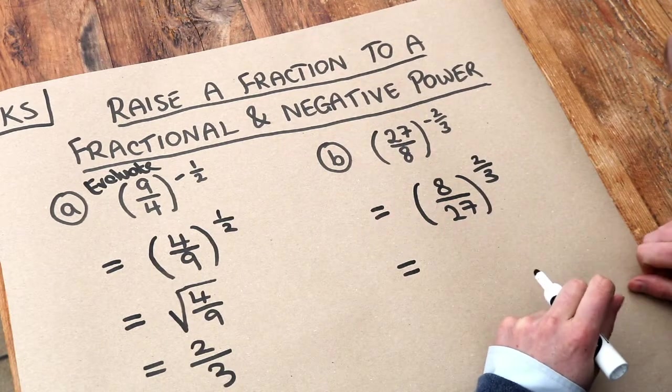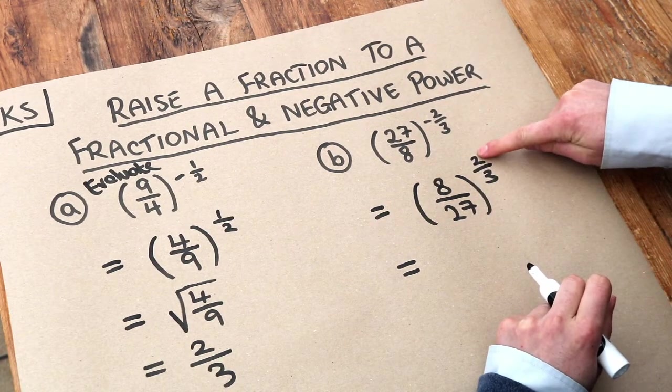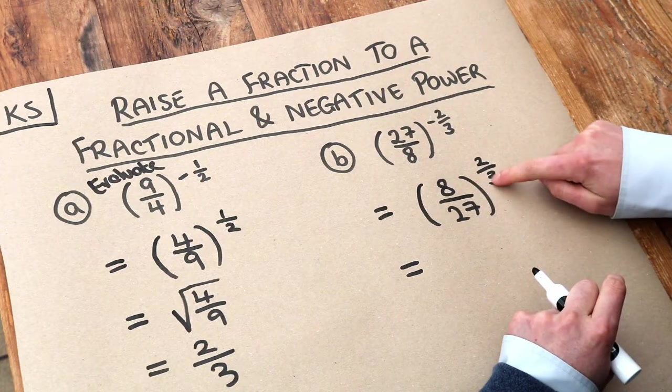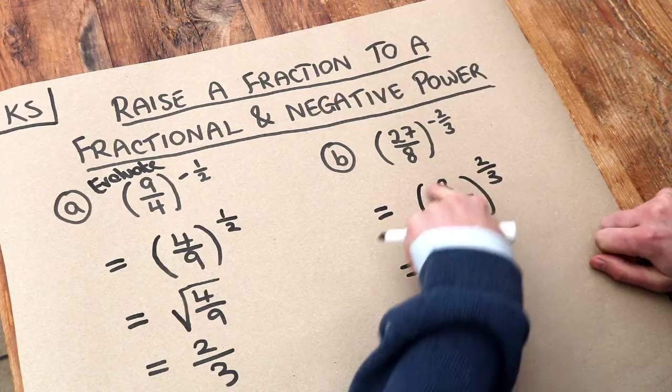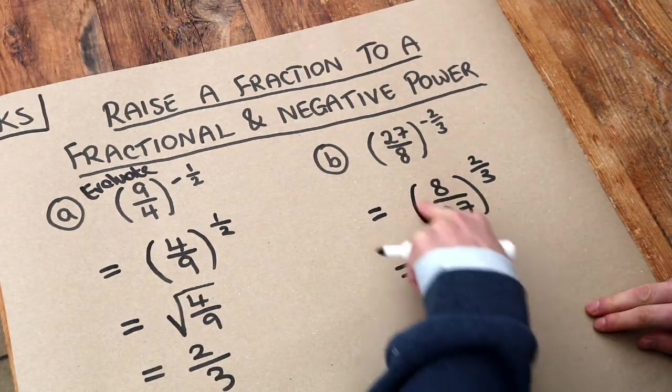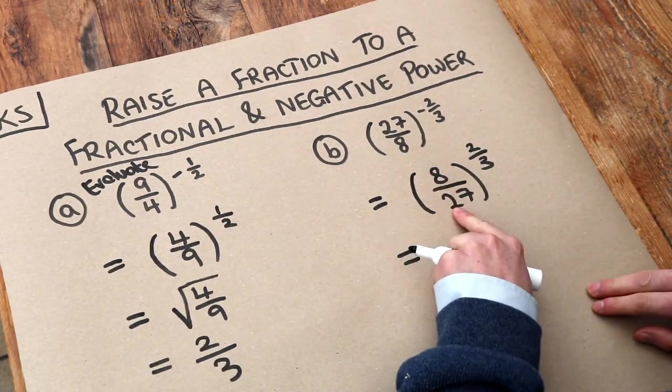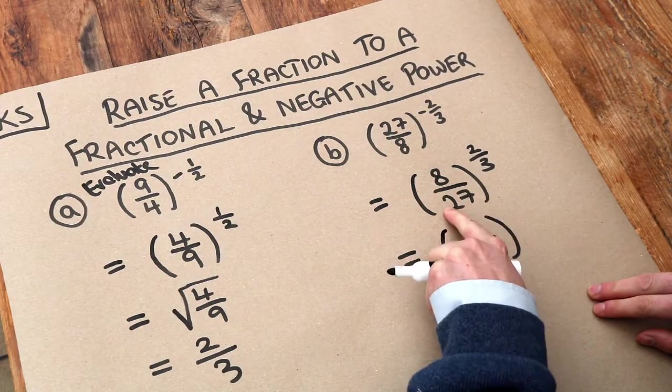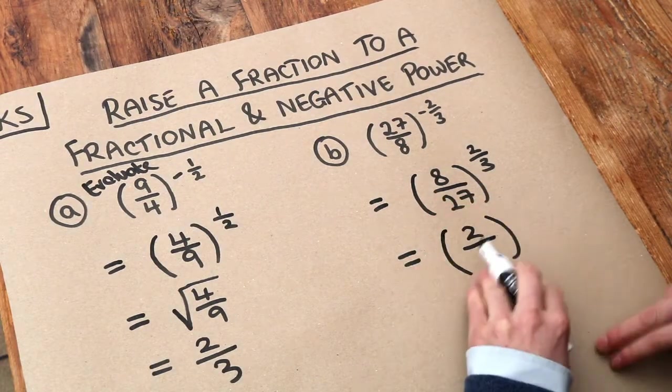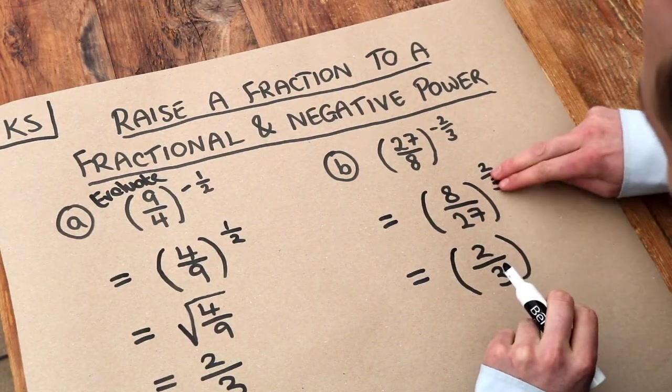Now we've got a more complicated fractional power because the numerator is not 1. But remember we always deal with the denominator in the fractional power first. So we've got this 3 here. That means we cube root this fraction here. So the cube root of 8 over 27. Well the cube root of 8 is 2, and the cube root of 27 is 3. So we've dealt with this denominator in the fractional power here, the 3.